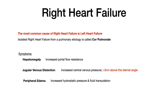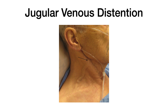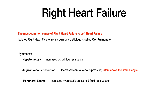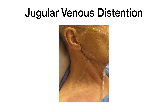Here's an image of jugular venous distension. In order for it to technically be JVD, it's got to be greater than three centimeters above the sternal angle. So just make sure you see a measurement of four or greater — that's JVD.